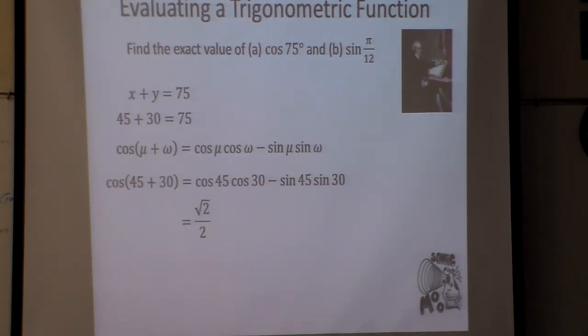Well, if I go to my unit circle, cosine of 45 is square root of 2 over 2. Cosine of 30 is square root of 3 over 2. Sine of 45 is minus square root of 2 over 2. And sine of 30 is 1 half. And you can see how I've kind of color-coded them right there to make them show up where they came from.